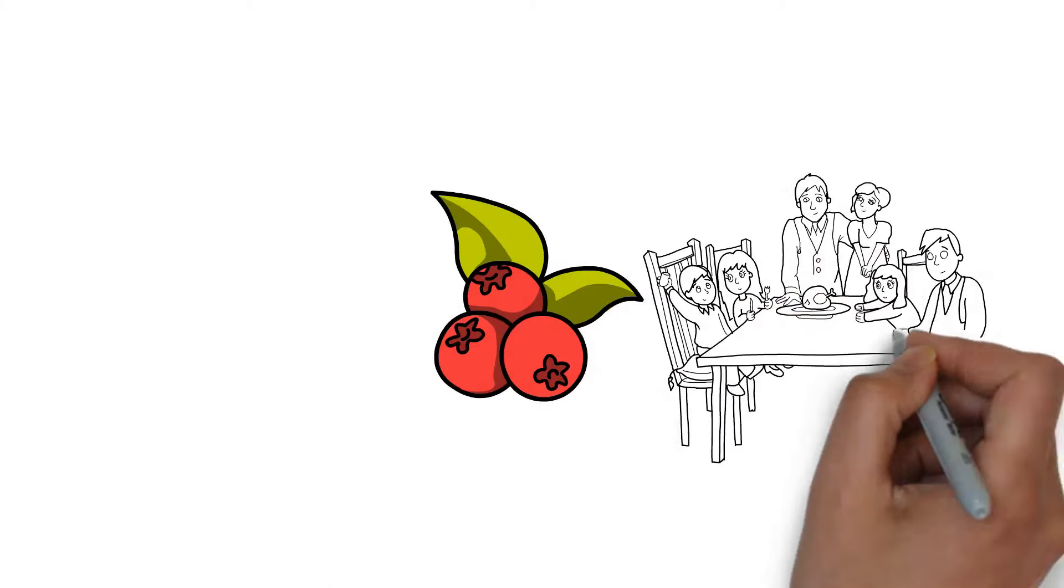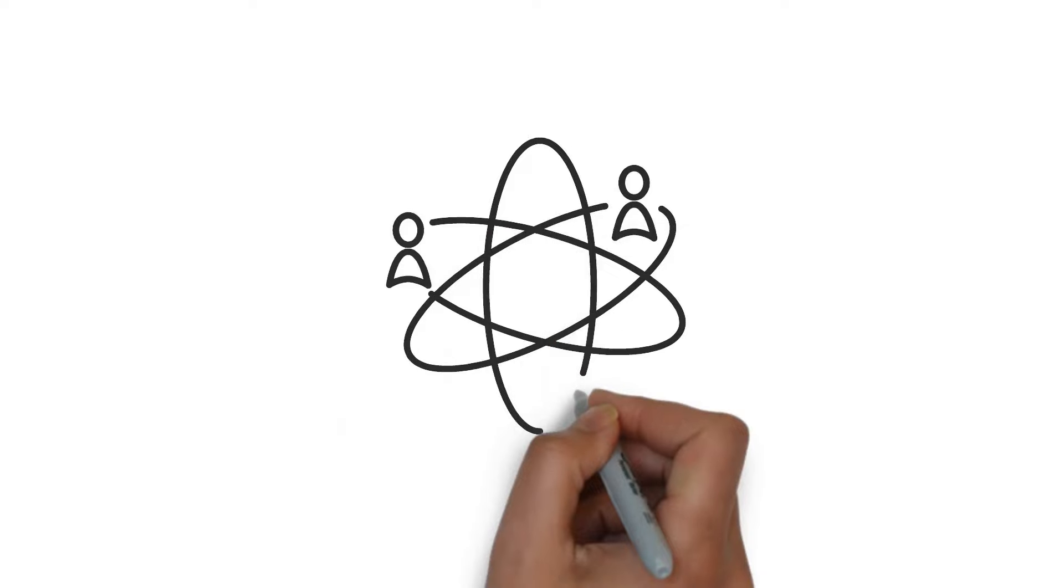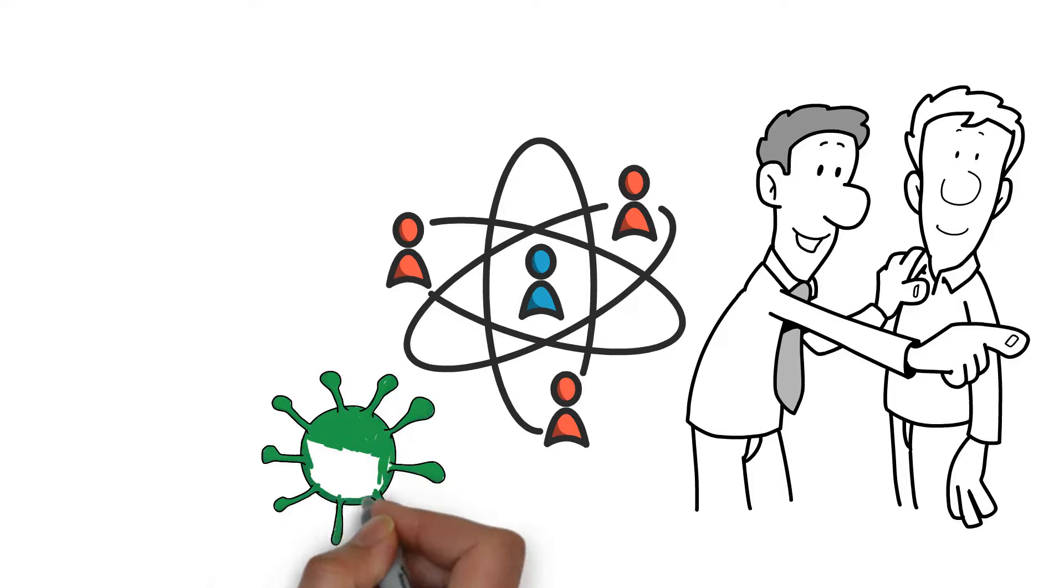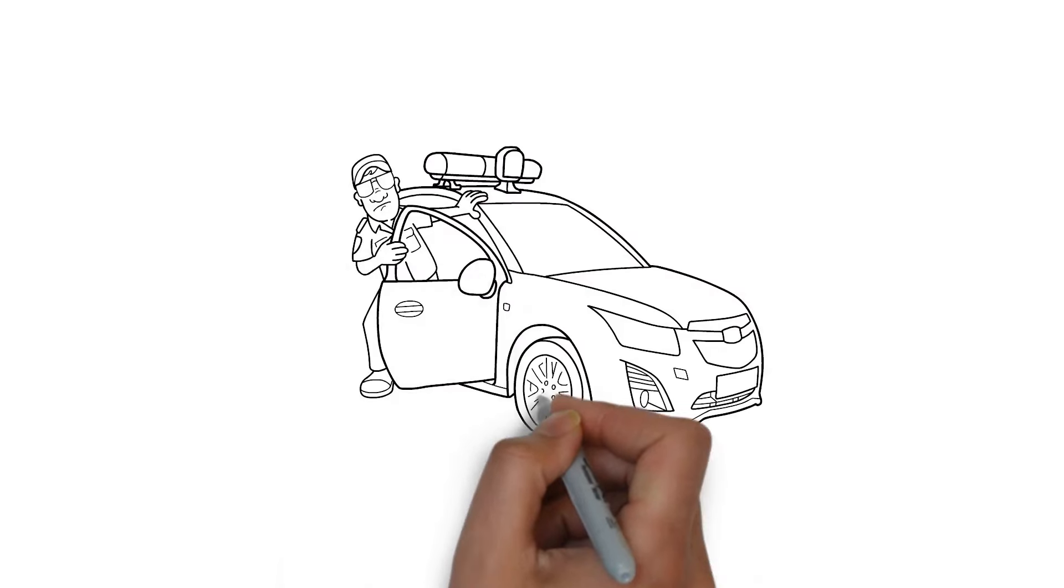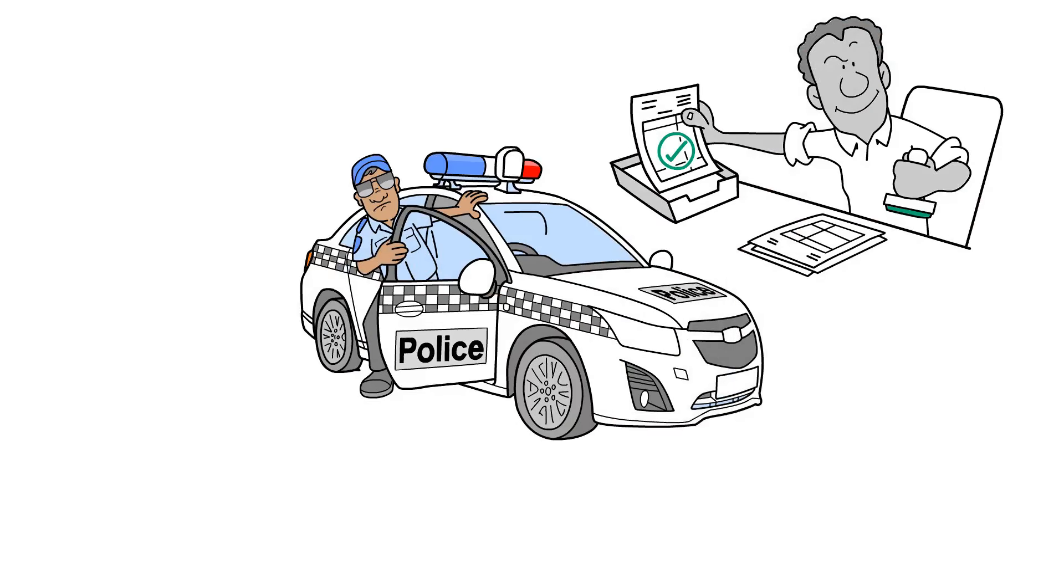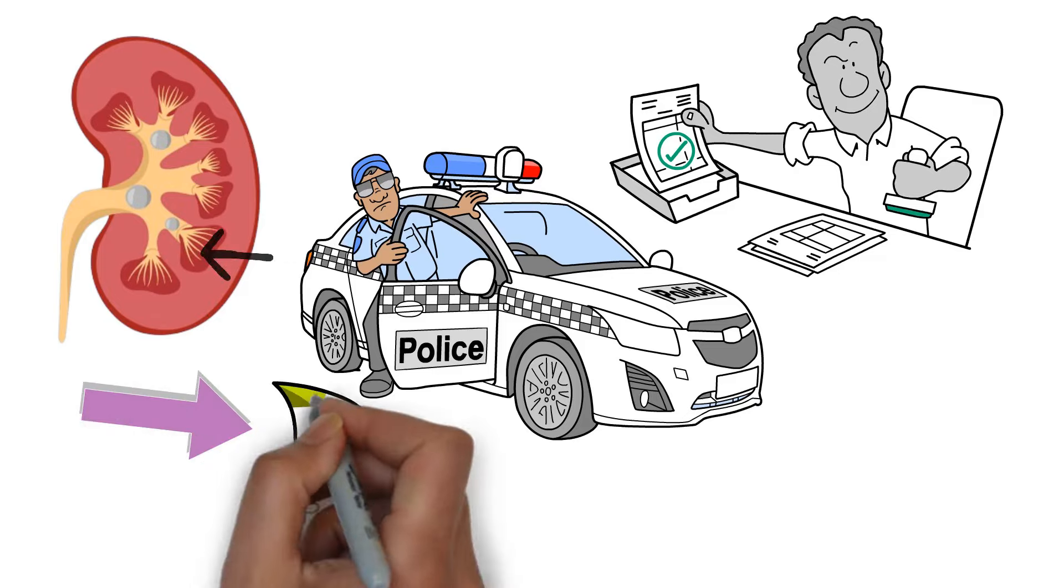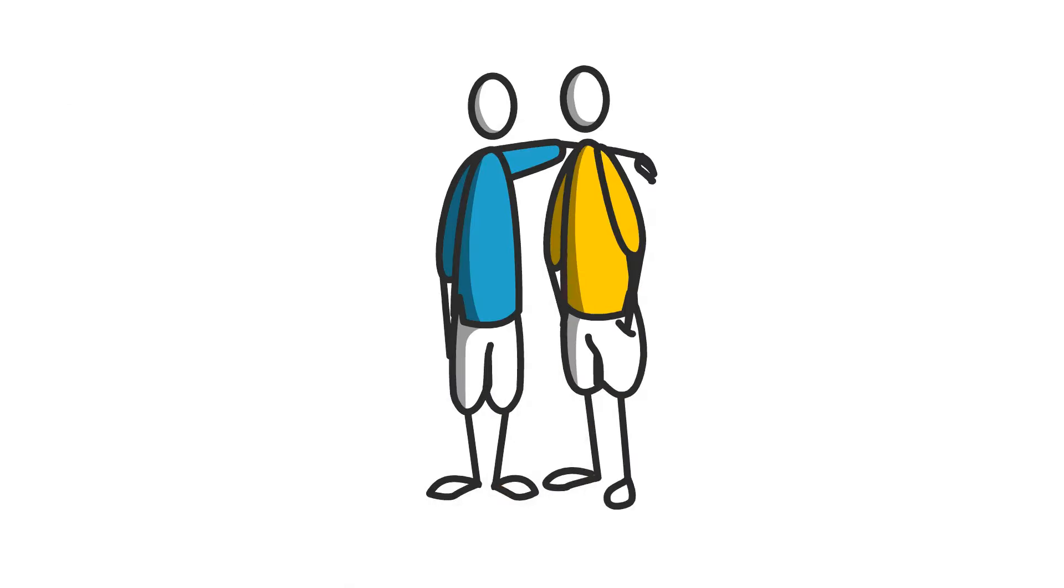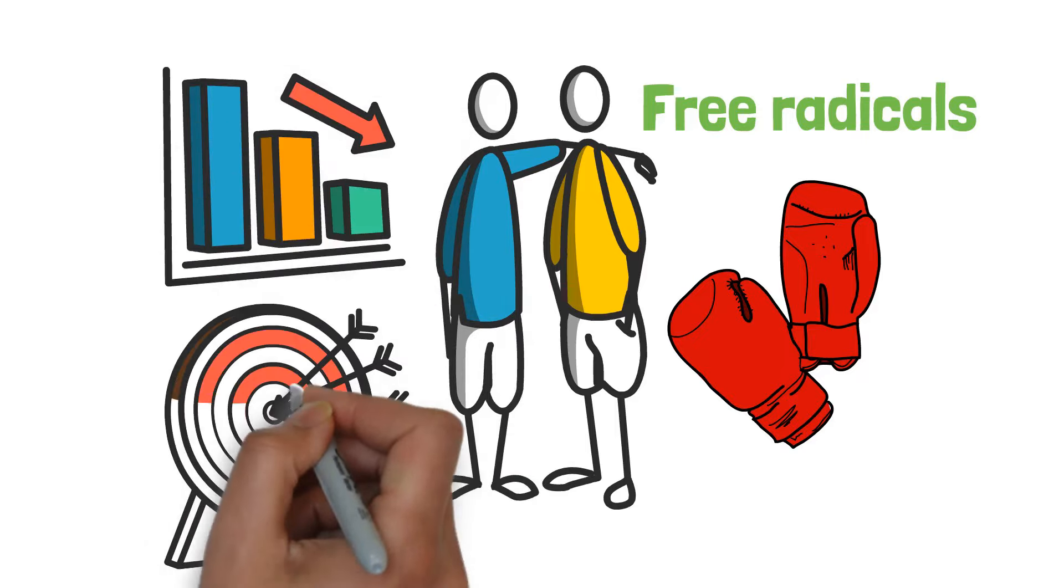These little red gems are famous for more than just their role in holiday dinners and as a go-to juice for urinary tract health. They're packed with compounds that act like bouncers at a club, keeping the bad bacteria from sticking around in your kidneys and urinary tract. It's like they're constantly patrolling, making sure your kidneys are in a safe bacteria-free zone. But here's the kicker, cranberries are also loaded with antioxidants. These are your body's best friends fighting off free radicals and reducing inflammation, which is a big win for your kidneys.